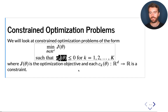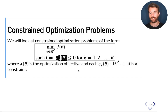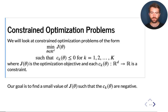At a high level, this optimization problem is searching for theta for which J is small — because we're minimizing it — and such that all the C_Ks are negative. That is the high-level goal of this optimization problem.